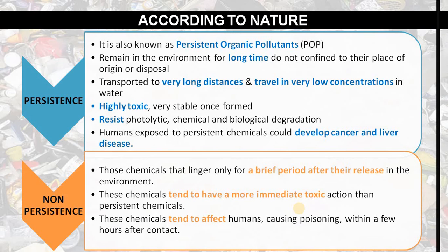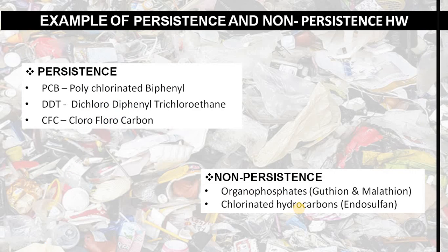Non-persistent chemicals tend to affect humans and cause poisoning within a few hours after contact. Examples of persistent hazardous waste include PCBs, DDT, and CFCs. Examples of non-persistent hazardous waste include organophosphates and chlorinated hydrocarbons.